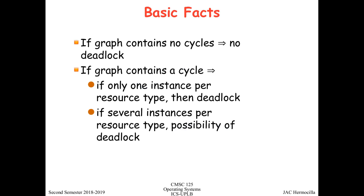To summarize: if a graph contains no cycles, there is no deadlock. If a graph contains a cycle and there is only one instance per resource type, then there is a deadlock. But if there are several instances of a resource type, there is only a possibility of a deadlock — not a certainty.